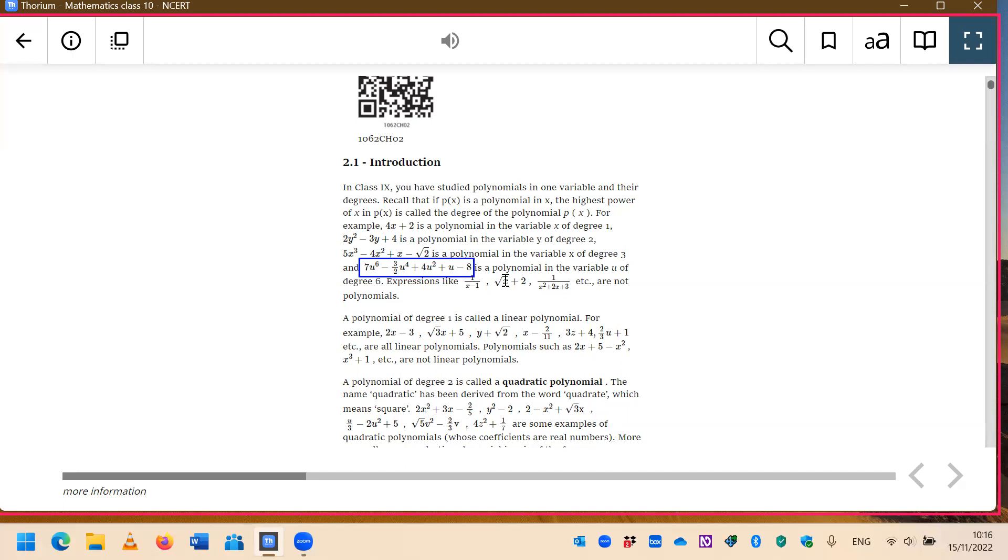Out of superscript minus 3 halves u to the 4th power. Now, this is very strange. 3 halves u to the 4th power. The student might not understand what is this 3 halves. So, again, the student will be able to press down arrow to zoom in.